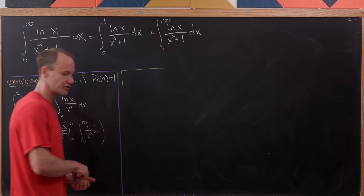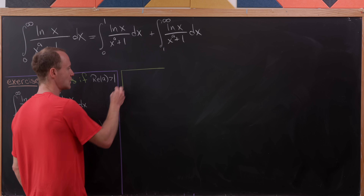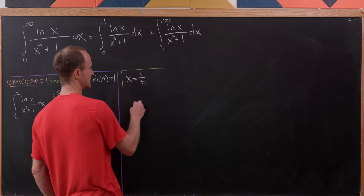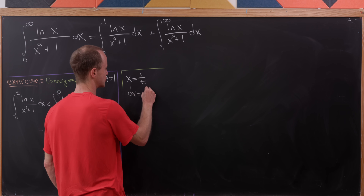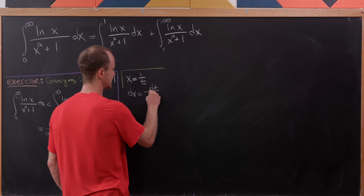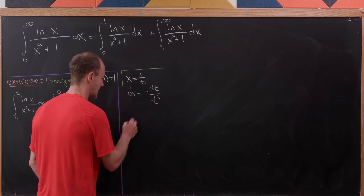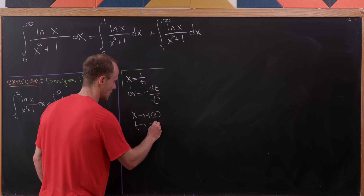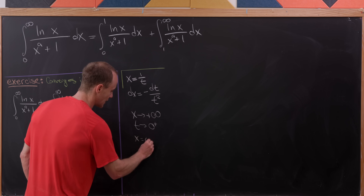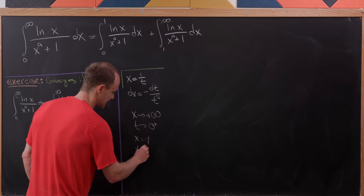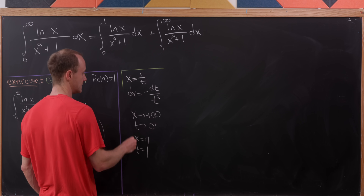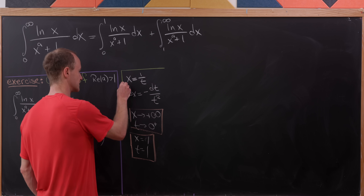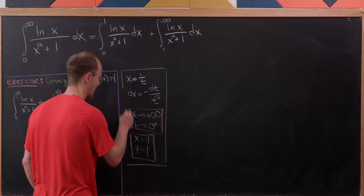The substitution that makes this happen is x equals 1 over t. That means dx equals negative dt over t squared. As x approaches positive infinity, t approaches 0 from above, and if x equals 1 then t also equals 1. All of these parts tell us how to change the variables within our integral as well as the bounds of integration.